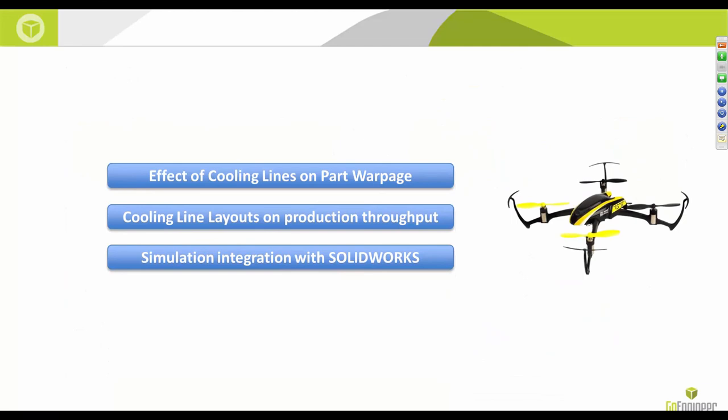The influences of those design changes are pretty significant. The out-of-plane Z-direction warping is sufficiently reduced between the initial and final design, and we also reduced the time to cool from about 35 seconds to about 14 seconds. The goal of this presentation was to address the different factors that influence part warpage and how we can simulate those effects with SOLIDWORKS Plastics, including how cooling lines directly affect both shrinkage and cooling time.